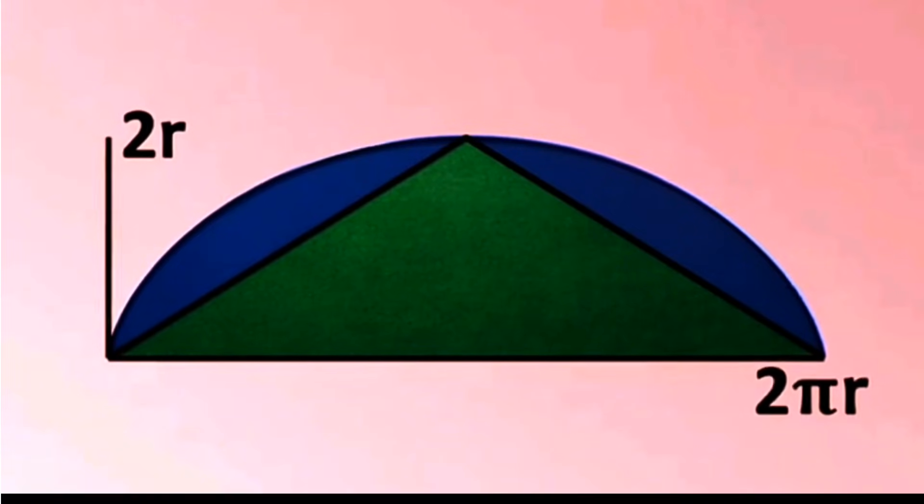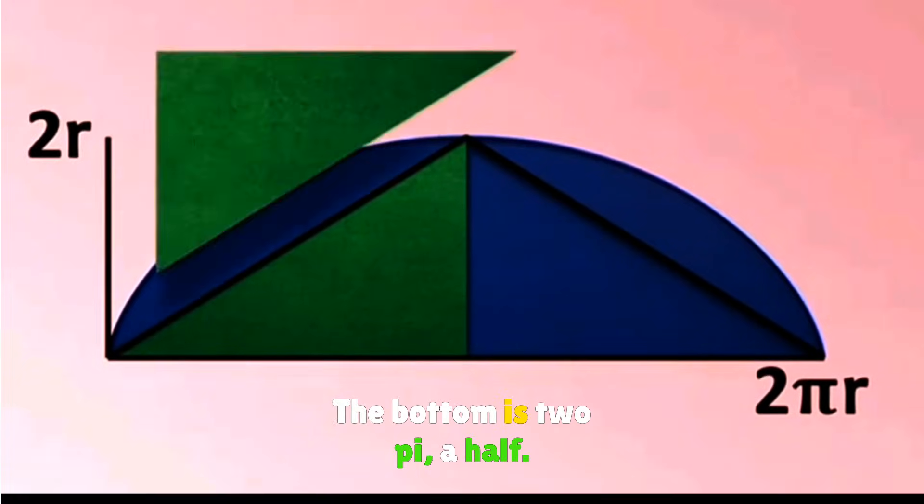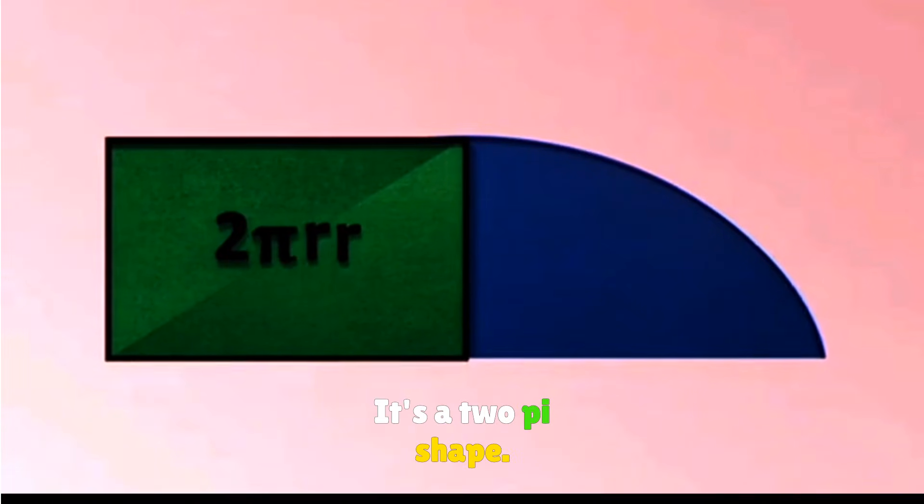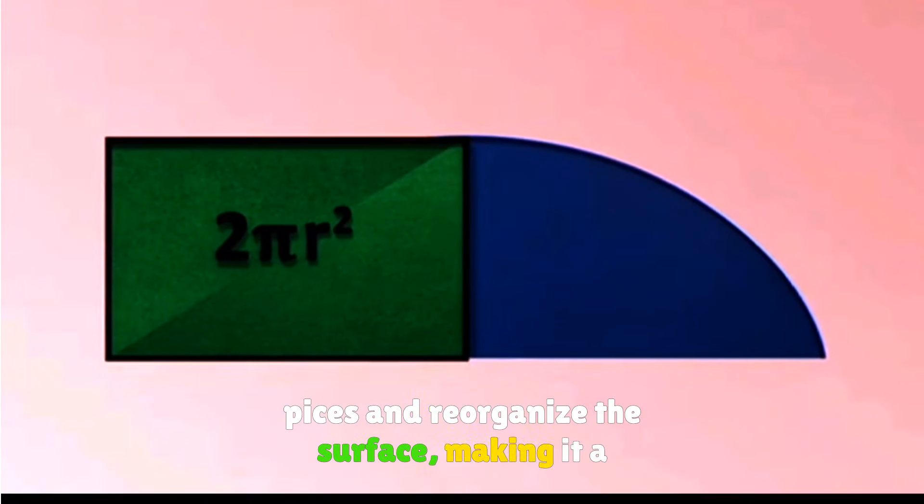The triangle's height is 2r. The bottom is 2πr. We can cut this triangle into two pieces and reorganize the surface, making it 2r times πr.